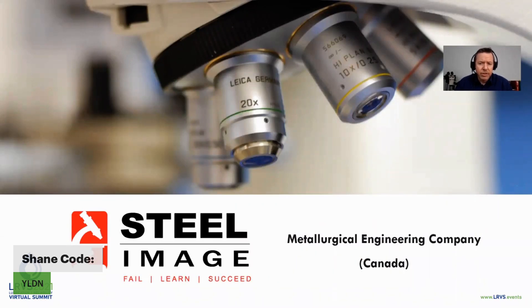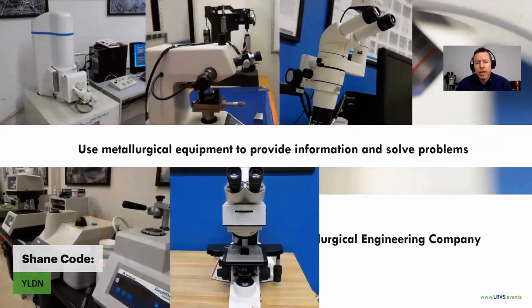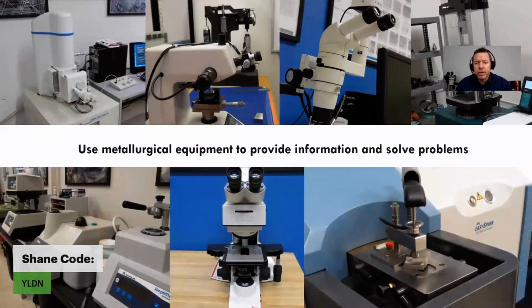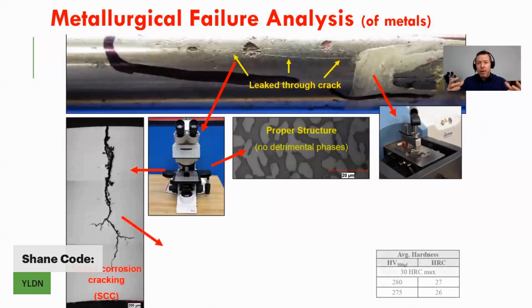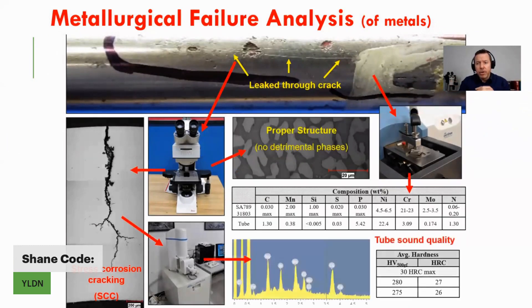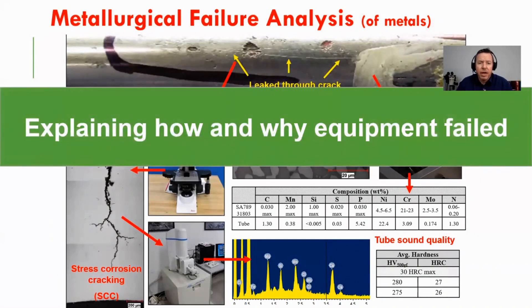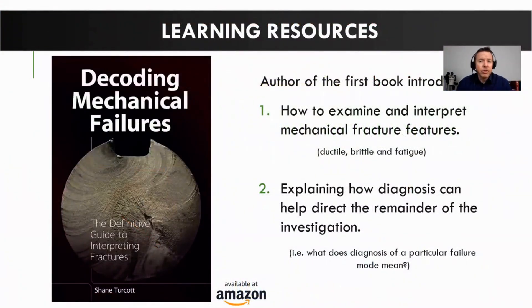I am a metallurgical engineer that started an engineering company called Steel Image. Although I'm not a reliability engineer, the vast majority of my work is supporting reliability efforts. Steel Image uses lab-based equipment to provide as much information as possible from parts. Predominantly what I do is when equipment fails — by getting more information that would not otherwise be obvious — we can provide more details useful to explaining how and why equipment has failed. I think the reason I'm here today is that I wrote a book called Decoding Mechanical Failures.